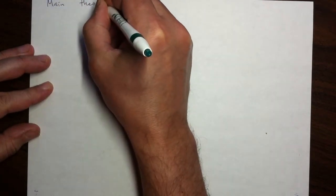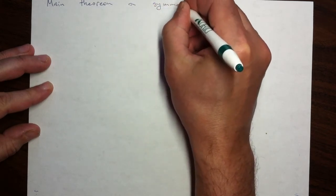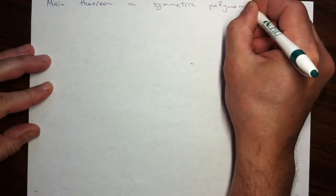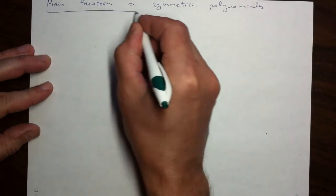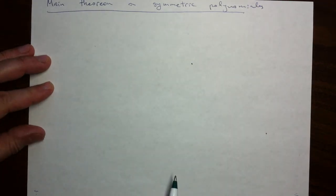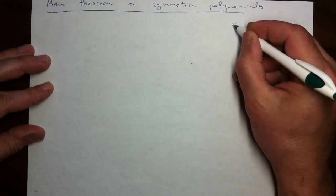Here an argument in favor of the main theorem on symmetric polynomials will be presented. The statement of this main theorem says that any symmetric polynomial is uniquely a polynomial in elementary symmetric polynomials.